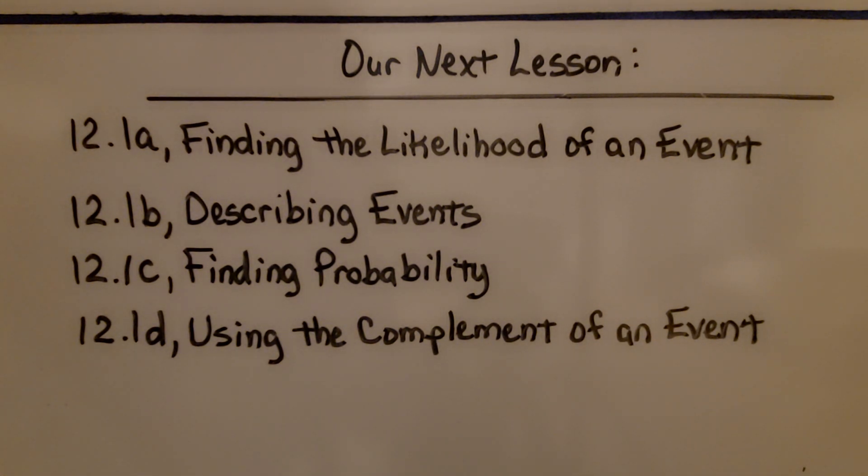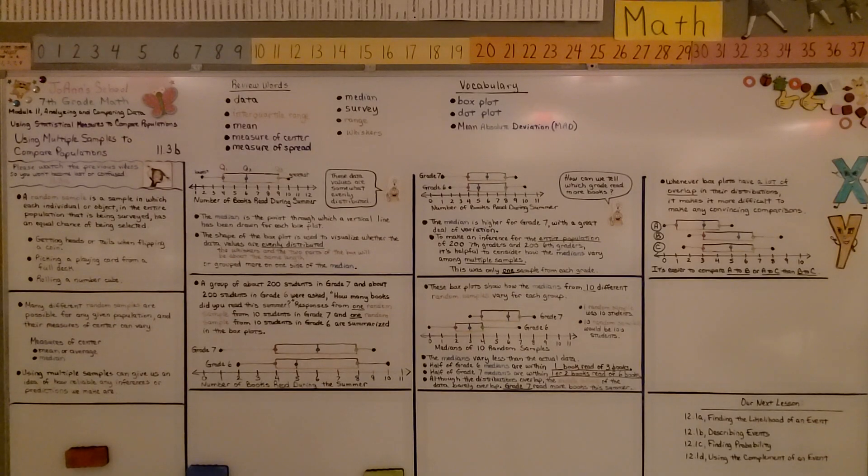We're now finished with module 11, and we're going to be moving on to module 12, which is about experimental probability. We're going to be talking about finding the likelihood of an event. Keep trying your best, and join me for the next module. Bye!